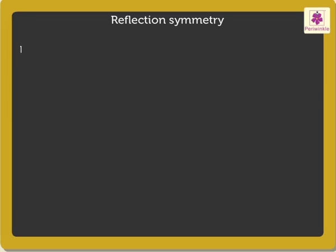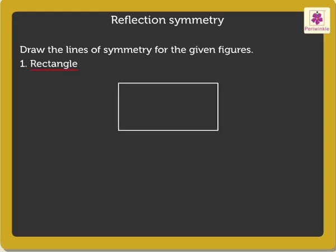Now, let's draw the lines of symmetry for the given figures. Figure 1: A rectangle. Here, we can divide the figure into two equal halves by folding it vertically or horizontally. Thus, we say that a rectangle has two lines of symmetry.